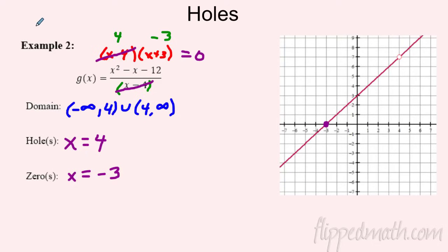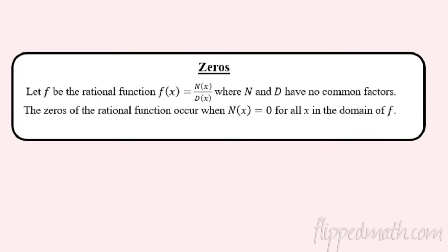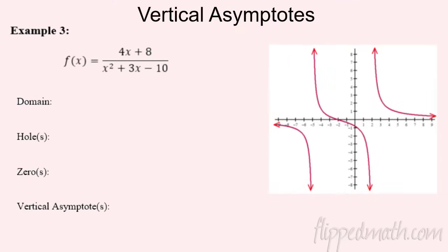Here's the formal definition of zeros: a zero occurs when the numerator equals zero, but the numerator and denominator cannot have any common factors — because if they cancel out, it's no longer a zero.